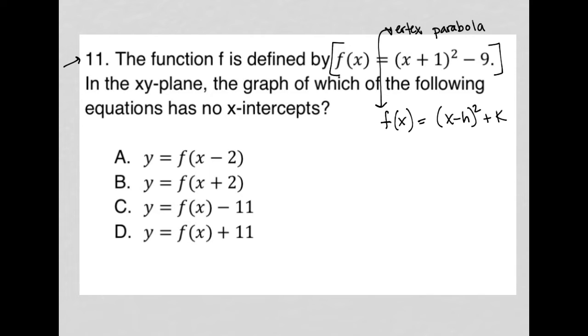Which means for us that our h value is negative 1 and our k value is negative 9. So our vertex, because h comma k is the vertex - that's why it's called vertex form - our vertex is at negative 1, negative 9.